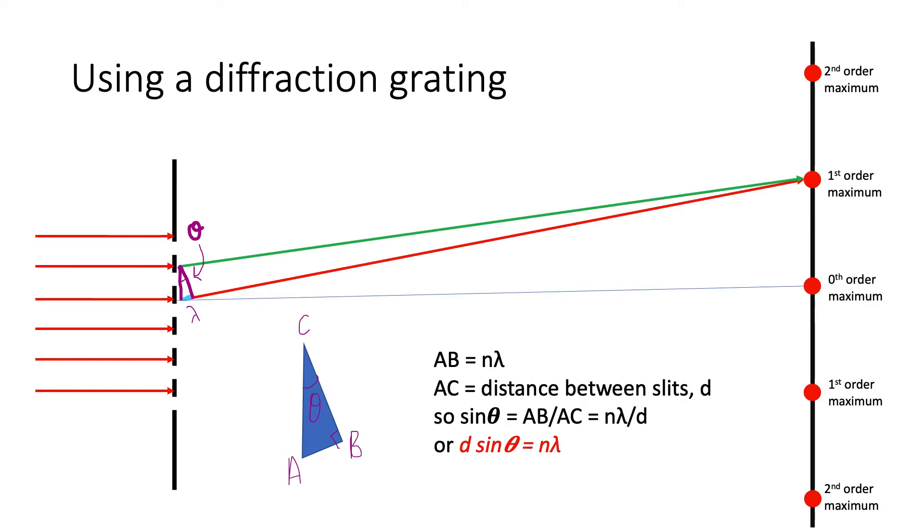So how do we find theta? If you imagine this line here between the diffraction grating and the zeroth order maximum, the angle that the first order, the ray of light to the first order maximum makes from that point is theta. That's the same angle that we're after, because those triangles are similar. So to work out that angle theta, we can make some straightforward measurements from our apparatus, because we need to know big D, the distance of the diffraction grating and the screen, and we also know x, the distance between the maxima. So if we know two sides of that triangle, we can use some straightforward algebra to work out what theta is from that.